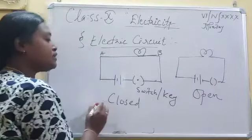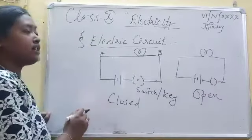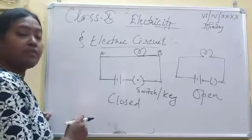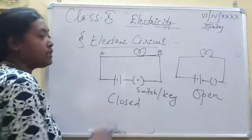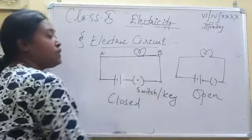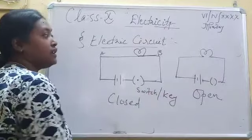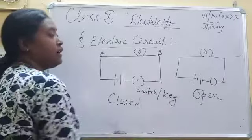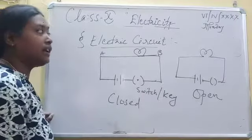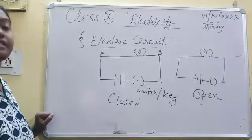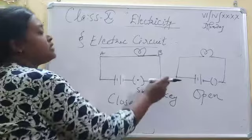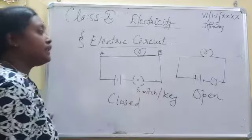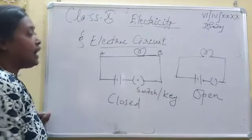What is closed circuit? It is the closed path of the flow of the charges where the current flows. And what is open circuit? The circuit is open, that means the current is not flowing through it — that means the circuit is broken. This is known as the electric circuit.